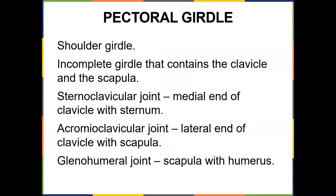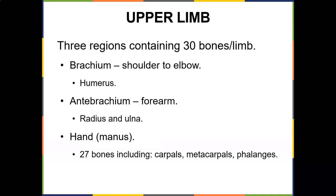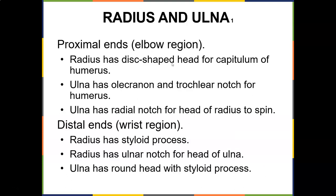To put it all together: the pectoral girdle is an incomplete girdle containing the clavicle and scapula. You have the sternoclavicular joint (medial end of clavicle with sternum), the AC joint (lateral end of clavicle with scapula), and the glenohumeral joint (scapula with humerus). The upper limb contains 30 bones total. The brachium (shoulder to elbow) is the humerus. The antebrachium (forearm) contains the radius and ulna. The radius has a dish-shaped head for the capitulum of the humerus; the ulna has the olecranon and trochlear notch. Notably, the ulna has a radial notch and the radius has an ulnar notch — don't get those confused.